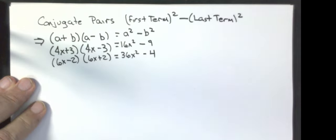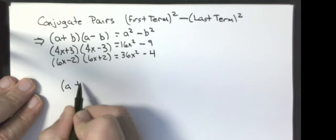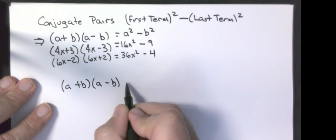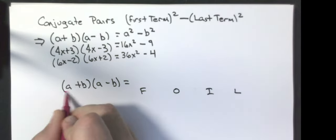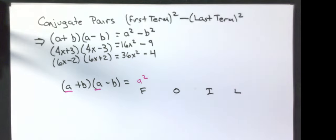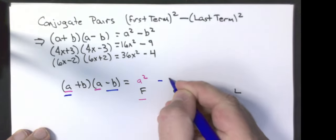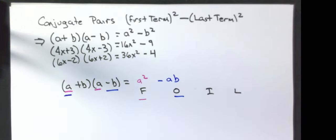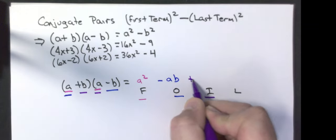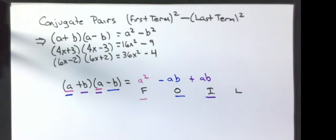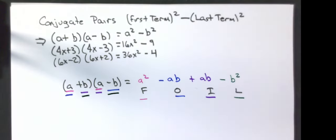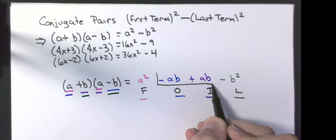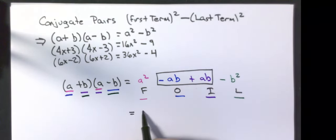I'm going to show you where the conjugate pair rule comes from by multiplying out (A + B)(A − B) using FOIL. First: A times A = A². Outer: A times negative B = −AB. Inner: A times B = +AB. Last: B times negative B = −B². The middle terms cancel each other out, and I'm left with just A² − B².